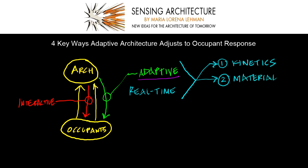A second way that adaptive architecture can adjust to occupant response is through its materials, especially as smart materials and nanomaterials are emerging. Materials themselves are able to react and respond, and architecture depends a lot upon its own materiality. So this is another way that architectural elements can contribute to an overall architectural language that is adaptable.